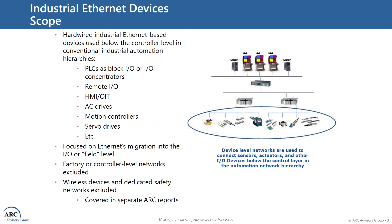Now the same is true not only of the edge infrastructure we just discussed, but also the actual end devices — things like the sensors, actuators, and other Ethernet-based I/O level devices that reside below the control layer in the automation network hierarchy.